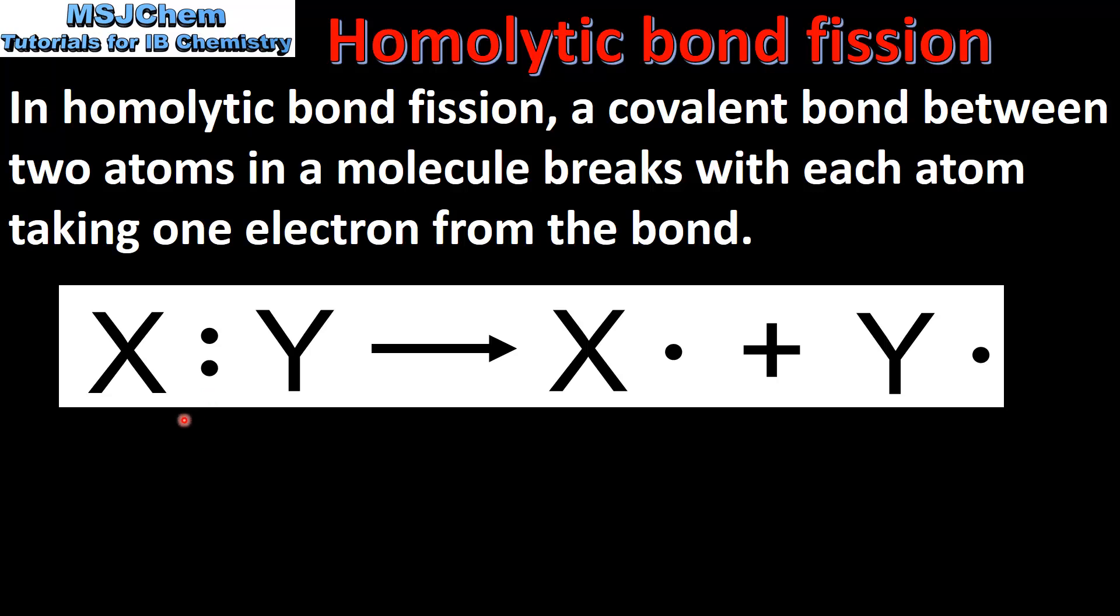So here we have two atoms X and Y which are bonded by a single covalent bond which is composed of two electrons. In homolytic bond fission this bond breaks with each atom taking one electron from the bond.